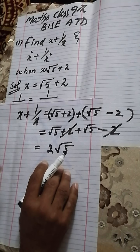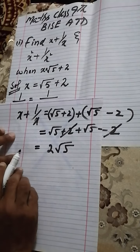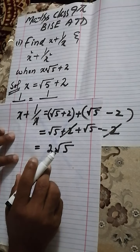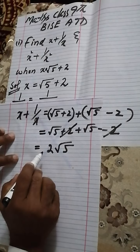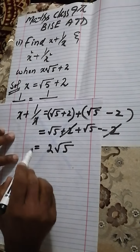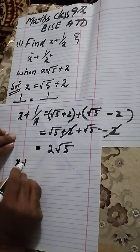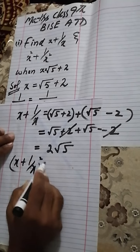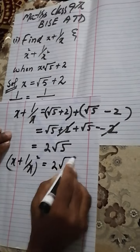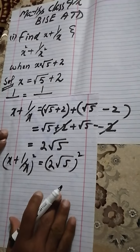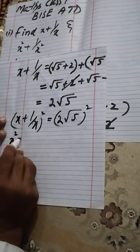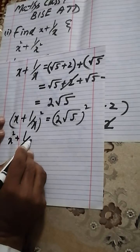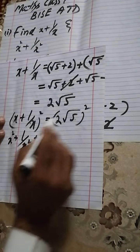Now the next value we need to find is x² + 1/x². Taking the square on both sides of x + 1/x = 2√5, we get (x + 1/x)² = (2√5)². This gives x² + 1/x² + 2 = 4 × 5 = 20.